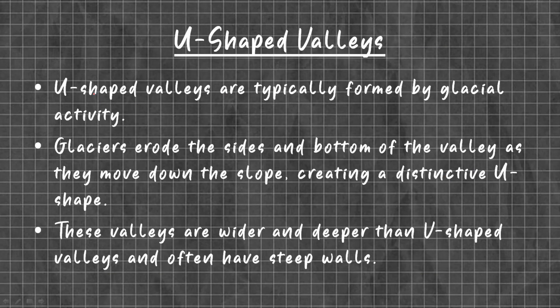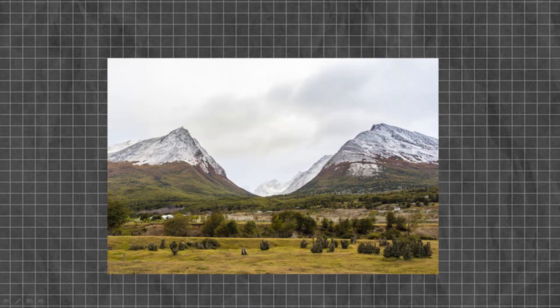U-shaped valleys are typically formed by glacial activity. The glaciers erode the sides and bottom of the valley as they move down the slope, creating a distinctive U-shape. These valleys are wider and deeper than V-shaped valleys and often have steep sides. Here is a picture of a U-shaped valley.